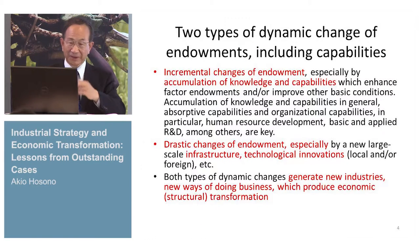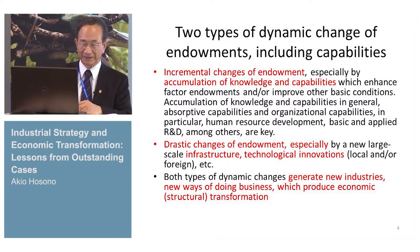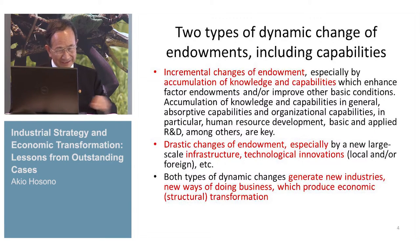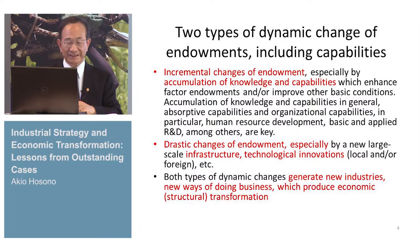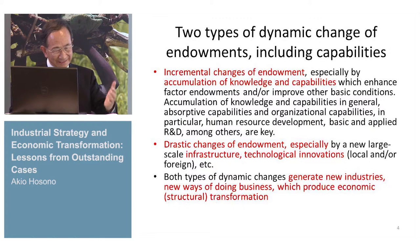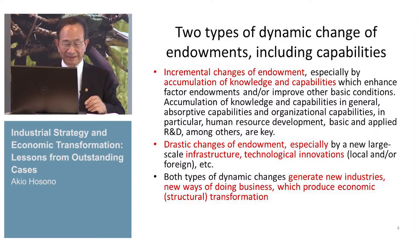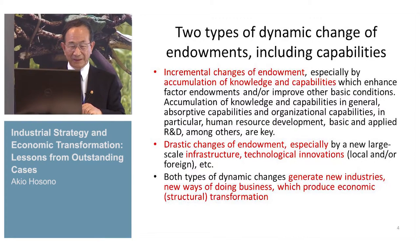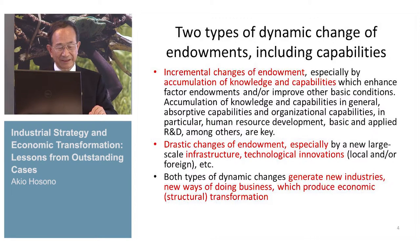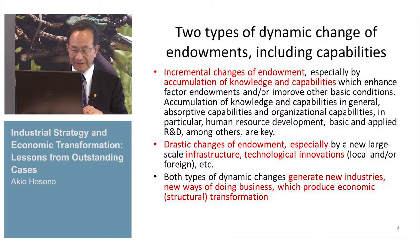There are two types of dynamic change of endowments. The first is incremental or gradual, especially accumulation of knowledge and capabilities. The second is much more drastic, especially caused by infrastructure, technological innovation, and so forth. All of them produce new industries which produce really important economic transformation.